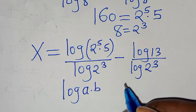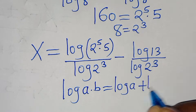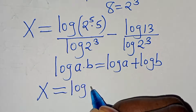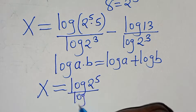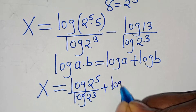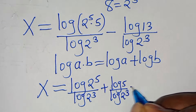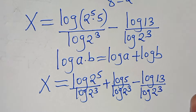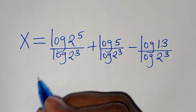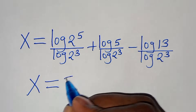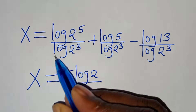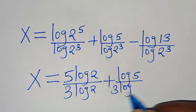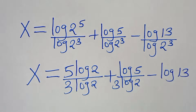The term log(2^5 · 5) is in the form log(a · b), which equals log(a) plus log(b). Applying this property: x equals log(2^5)/log(2^3) plus log(5)/log(2^3) minus log(13)/log(2^3). Applying the power property, log(2^5) becomes 5·log(2) and log(2^3) becomes 3·log(2).